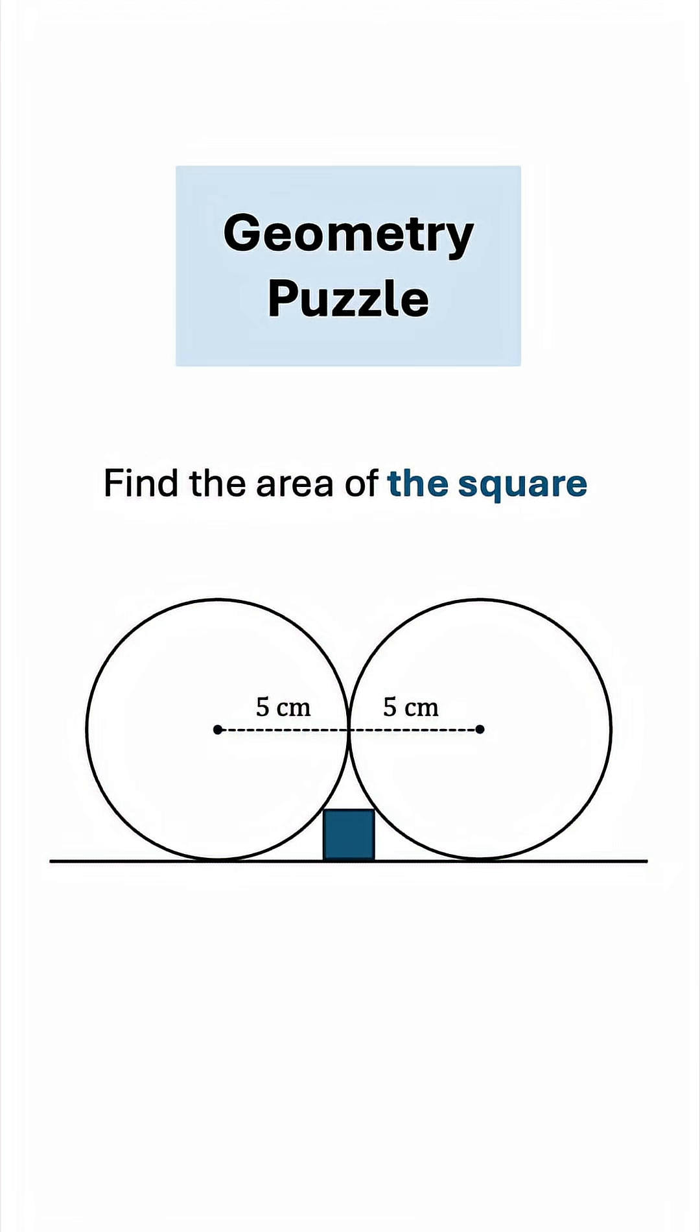Can you solve this geometry puzzle? The circles are tangential, the line is tangent to both circles, and they barely touch the square at two adjacent vertices. Give this problem a try and keep watching to see the solution.